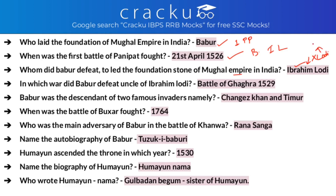In which battle did Babar defeat the uncle of Ibrahim Lodi? The uncle was Mohammad Lodi, defeated in the Battle of Ghagra in 1529. Babar was the descendant of two famous invaders — Changez Khan and Taimur — one from the paternal side and the other from the maternal side. The Battle of Baksa was fought in the year 1764.